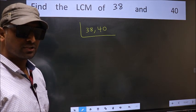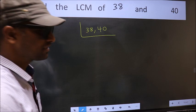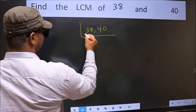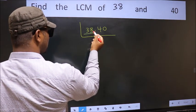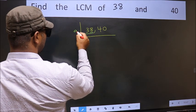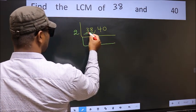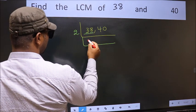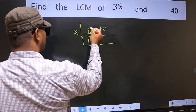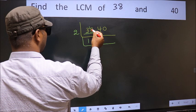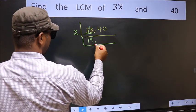Now focus on the first number, which is 38. The last digit is 8, so take 2. The first digit is 3; a number close to 3 in the 2 table is 2. So 3 minus 2 is 1, carry forward 18. When do we get 18 in the 2 table? 2 nines are 18. So 38 divided by 2 gives 19.